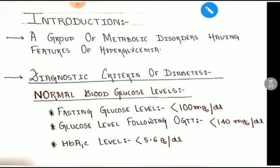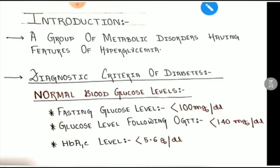To understand increased levels of glucose in the blood, we first need to know the normal blood glucose levels. The fasting blood glucose level in a normal person is less than 100 mg per deciliter. This fasting blood glucose level is measured after a person does overnight fasting — the blood glucose level measured the next day is the fasting blood glucose level, and normally it has to be less than 100 mg per deciliter.